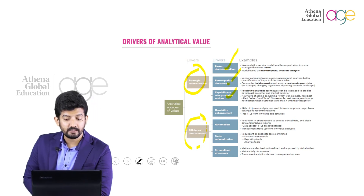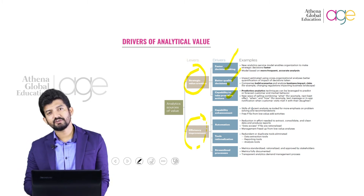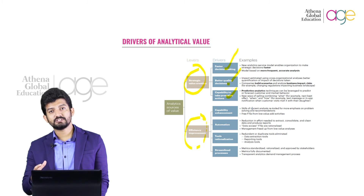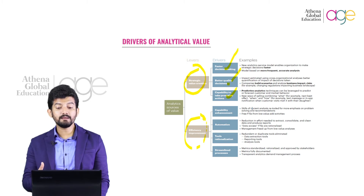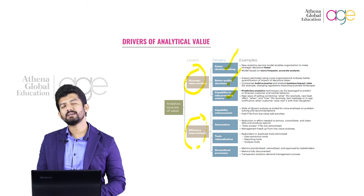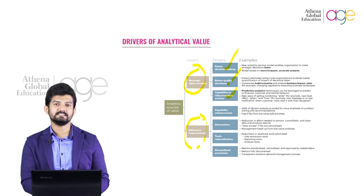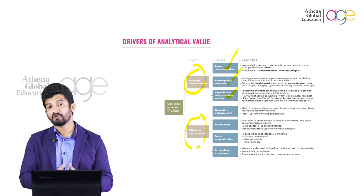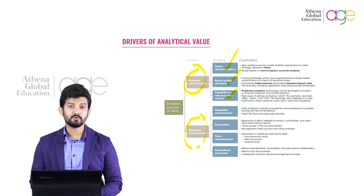For faster decision making, a new analytics service model enables organizations to make strategic decisions faster. When talking about strategic decisions, we mean long-term dependencies — the complex procedure of strategic decision making is made simpler with analytics. The model is based on more frequent and accurate analysis. You are not relying on historic or predated data; you are relying on existing, recent data. With automation, the system itself tells you where you currently stand.